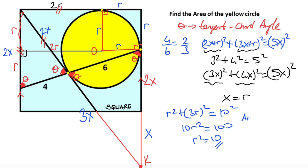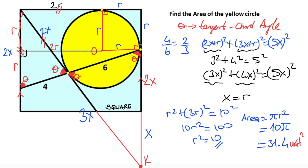Therefore, the yellow circle area equals pi times r squared. We know r squared equals ten, so the area equals ten pi. Since pi equals approximately 3.14, the area equals approximately 31.4 square units. Thanks for watching.